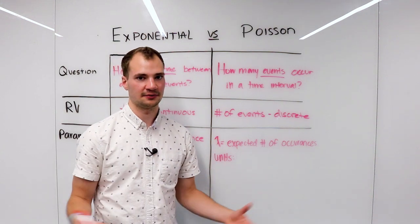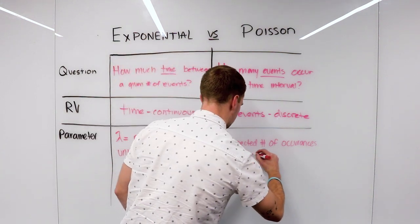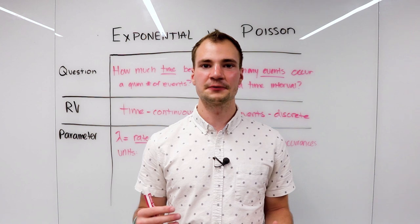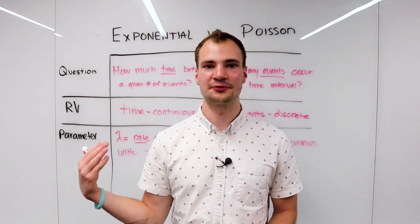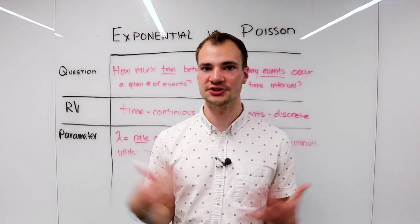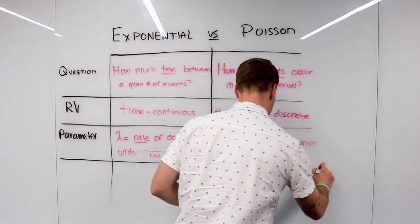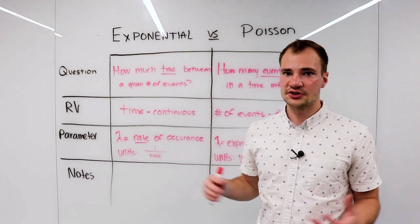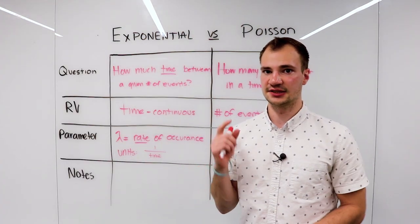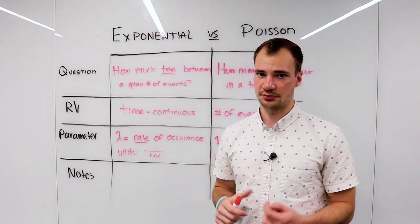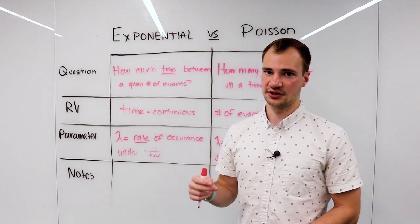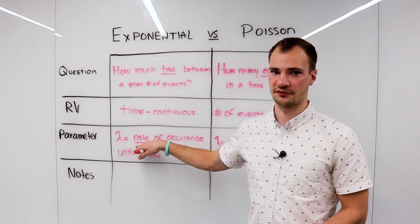Now before we wrap up, I want to mention some cool facts about the exponential distribution that maybe you don't know because they're usually skipped over. So first of all, the exponential is a special case of the gamma distribution when the shape parameter is equal to one and the scale is equal to one over the random variable.